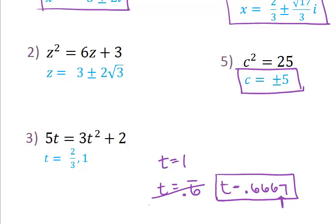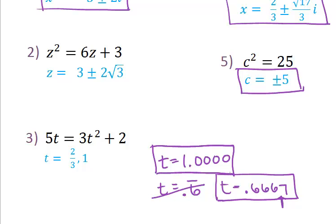T equals 1 is also fine, but if it specifies that you need to round to four decimal places, then you should also put four decimal places behind it. Just make sure you read what the exact homework problem asks you to do.